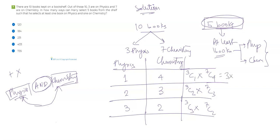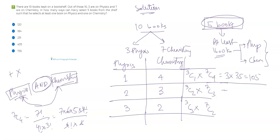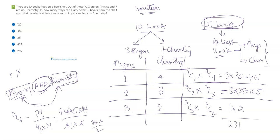3C1 is 3. As for 7C4, it can be written as 7 factorial by 4 factorial into 3 factorial, which gives you 35. So the first case gives 3 × 35 = 105. 3C2 is also 3 and 7C3 equals 35 as well, so the second case also gives 105. I'm not doing every calculation in detail because the idea here is to teach AND and OR logic, not the mechanics of permutations and combinations. 3C3 is 1 and 7C2 equals 21. So the total comes out to 105 + 105 + 21 = 231.